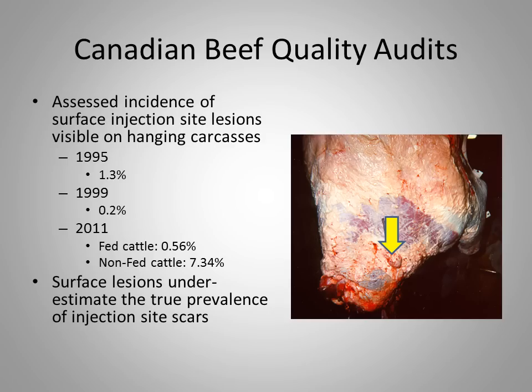We conducted Canadian beef quality audits to look at various carcass attributes, including the incidence of surface injection site lesions on hanging carcasses. In the 1995 beef quality audit, we found that 1.3% of hanging carcasses had visible surface injection site lesions. If you look at the picture on the right, that little bubble under the yellow arrow is an injection site lesion.